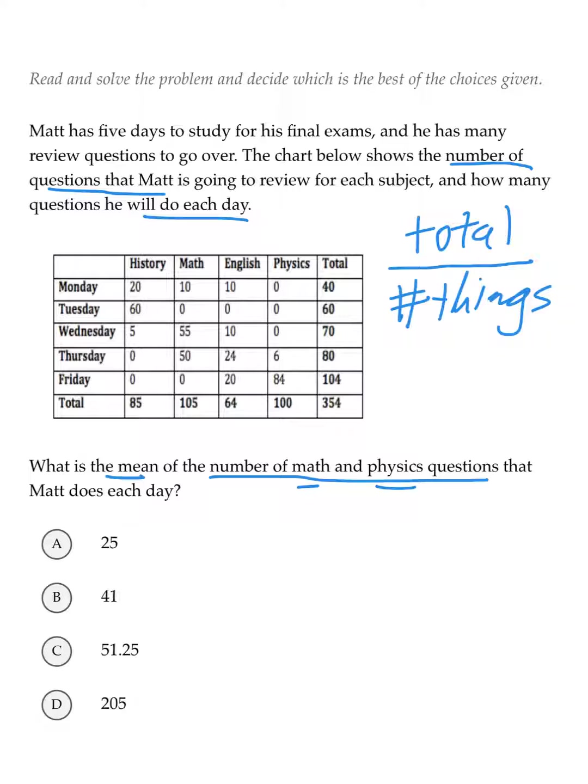First we need to find the total number of math and physics questions that Matt answers. That's easily found on the chart, since total is listed at the bottom for both: 105 for math, 100 for physics. So that's 205 total questions for math and physics together over all the days.